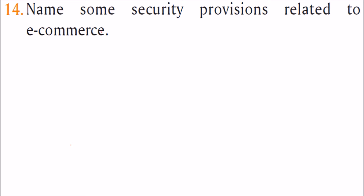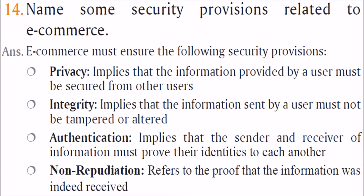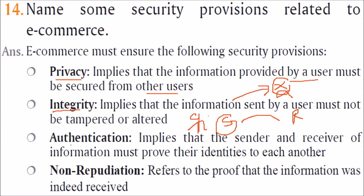Name some security provisions related to e-commerce. E-commerce must ensure: Privacy — information provided by the user must be secured from any other user. Integrity — information sent by the user must not be tampered or altered. Authentication — the sender and receiver must prove their identities to each other. Non-repudiation — once things are sent, the other party cannot deny receipt; it refers to proof that the information was indeed received.